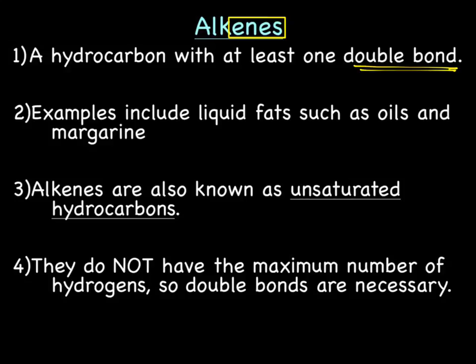Alkenes are also known as unsaturated hydrocarbons because they do not have the maximum number of hydrogens, so double bonds are necessary.